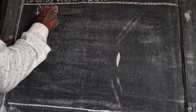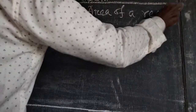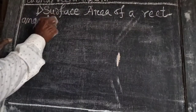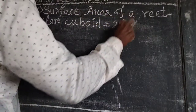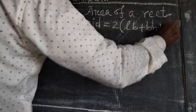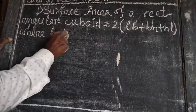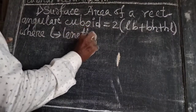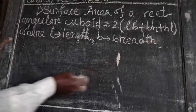What is the surface area of a rectangle for Class 9? You should know some rules or formulas. Number 1: surface area of a rectangular cuboid is equal to 2 into (LB + BH + HL), where L is length, B is breadth, and H is height.